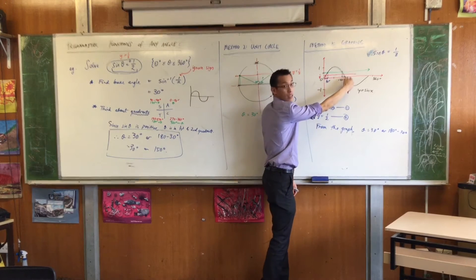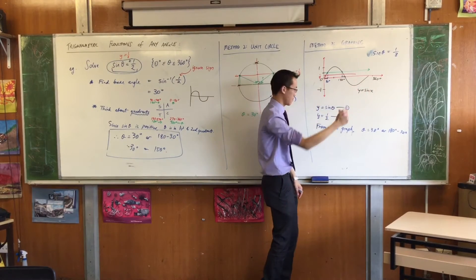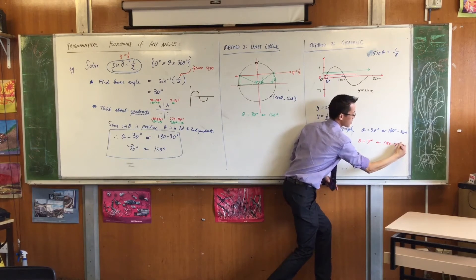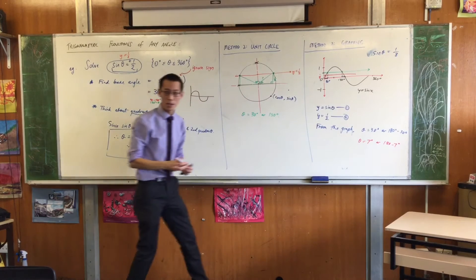Well, it'll be 180 minus seven degrees, right? So from the graph, it will be seven degrees or 180 take away seven degrees, and then there's my answer.